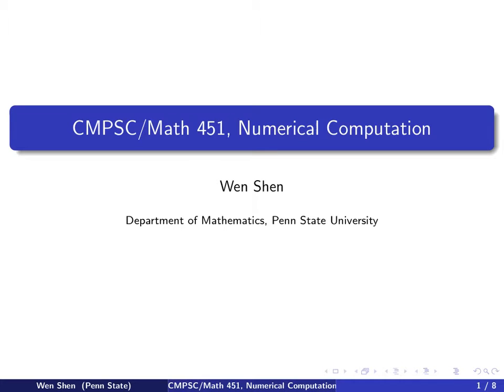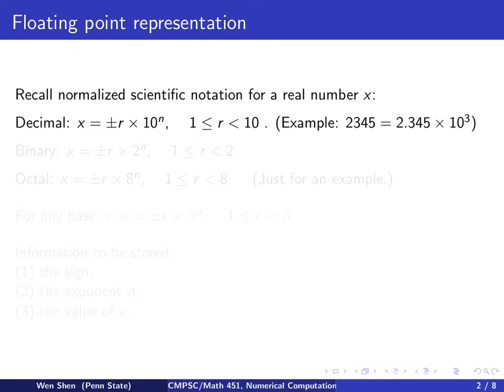Hello everyone. Welcome to the third video of chapter one for numerical computation. In this video, we will learn how a computer stores a number, a binary number, in its memory. This is called a floating point representation.